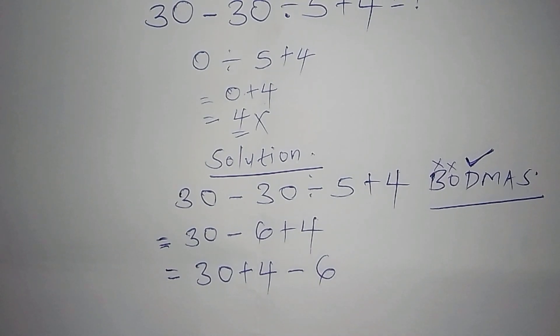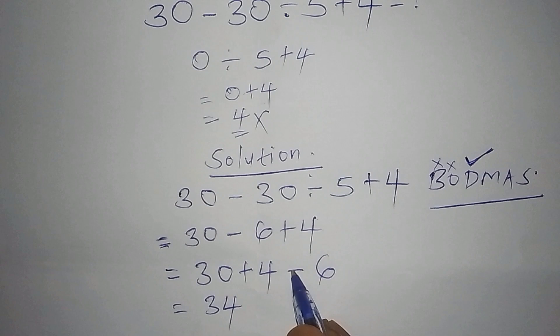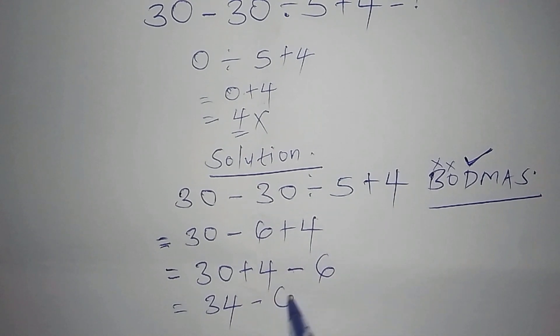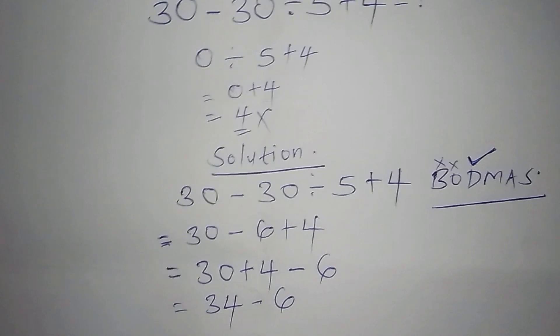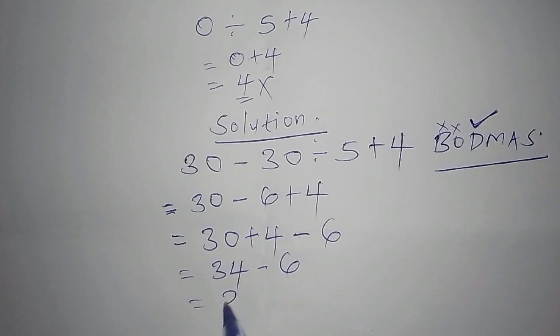After we shall have reached there, now we shall have 30 plus 4, and 30 plus 4 now becomes 34, then minus 6. So here now, our correct answer now becomes 28. So the answer now becomes 28.